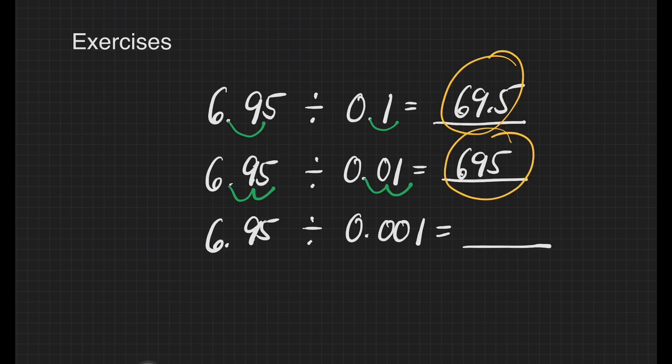For the third one, we have 6 and 95 hundredths divided by one-thousandth. And we will move three decimal places for both dividend and divisor, and we will write zero on the empty space here. And we will get 6950 as our final answer.